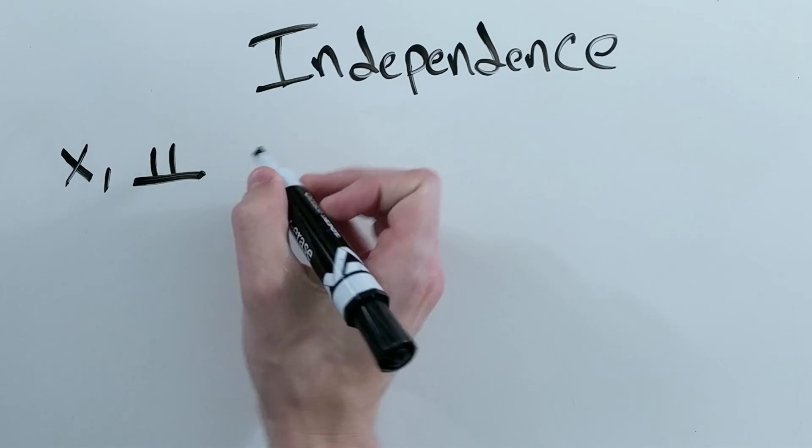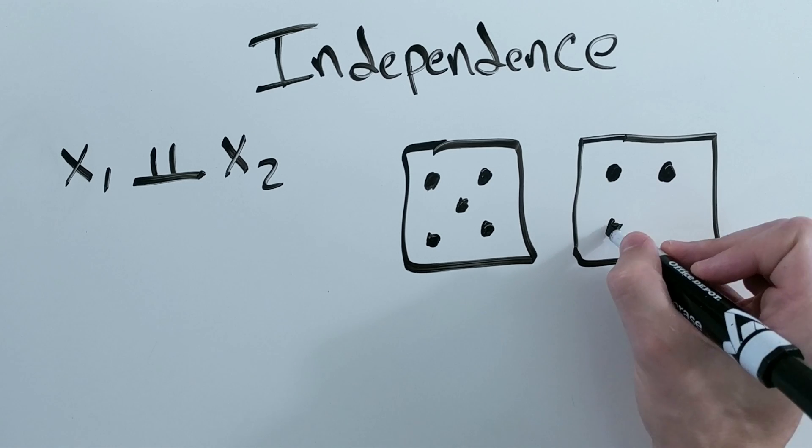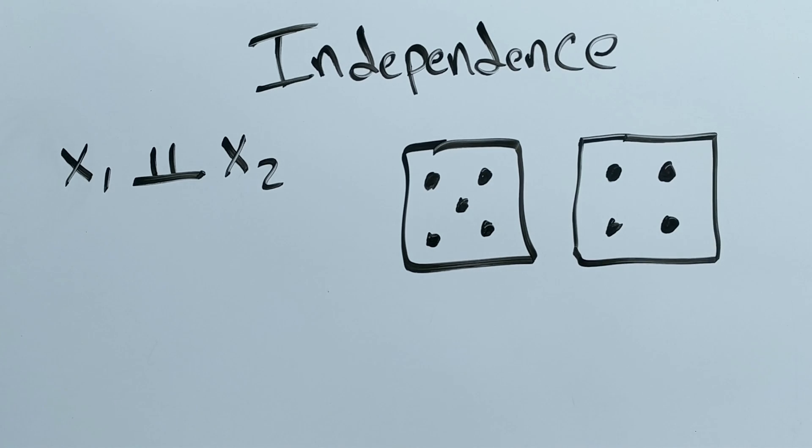Independence means that the value of an example doesn't affect what the value of the other examples are, like how when you roll two dice, the result of both rolls doesn't depend on the other die.